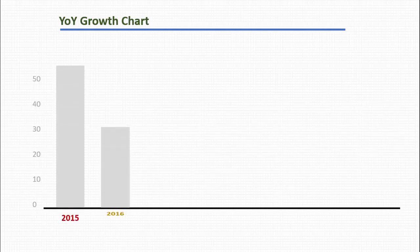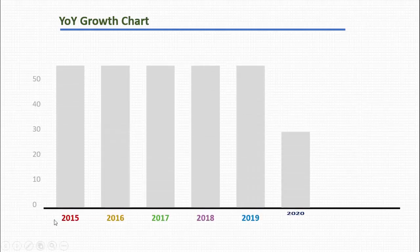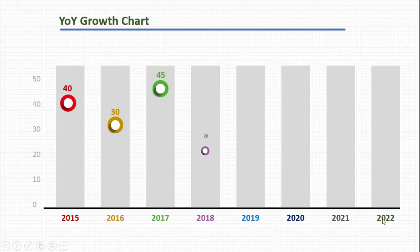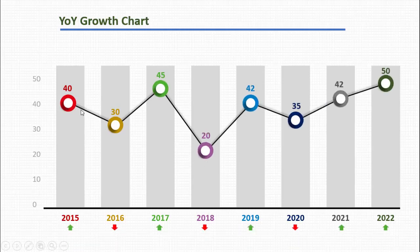In today's tutorial, I'm going to show you how to create a manual growth chart in PowerPoint. When I click, you can see I have created different years from 2015 to 2022. For each year you can define the growth value, then connect them with a line graph. I've also added arrows indicating whether a particular year had growth or degrowth — you can increase or decrease these options depending on your requirement.